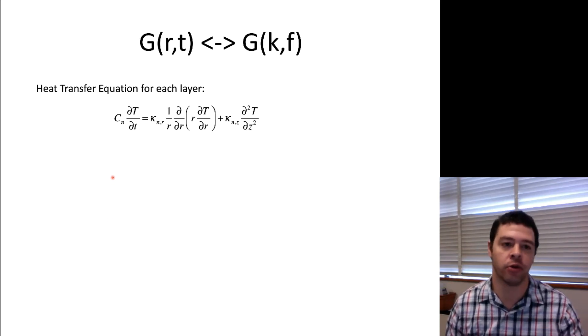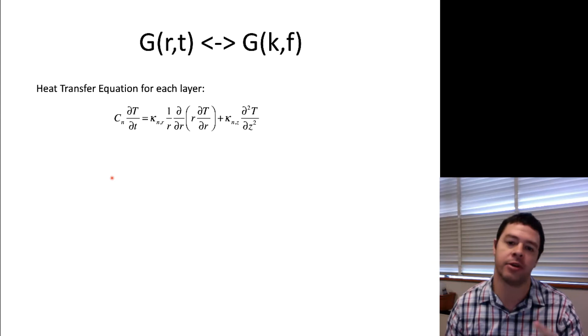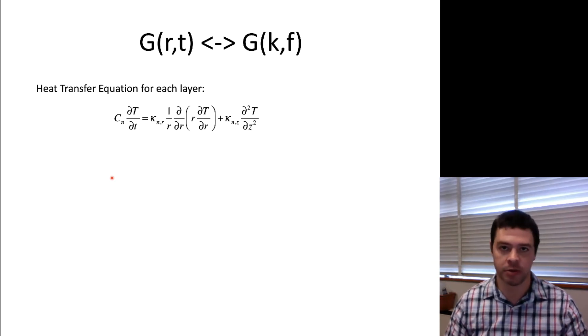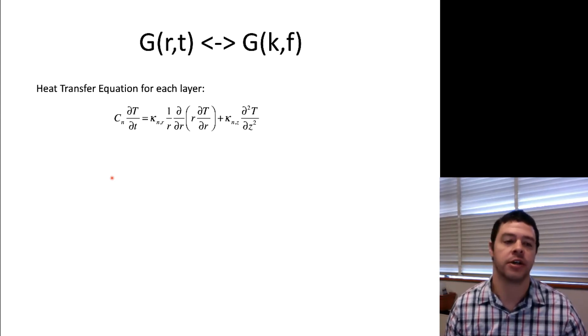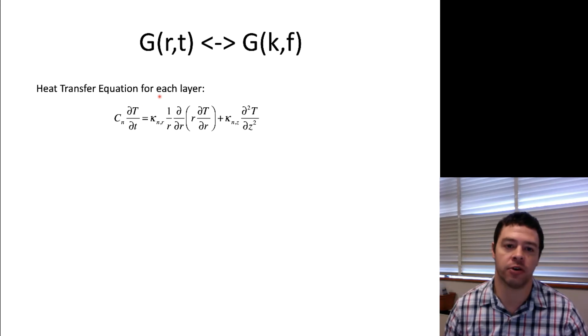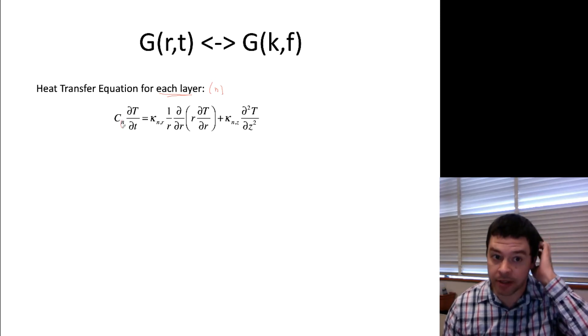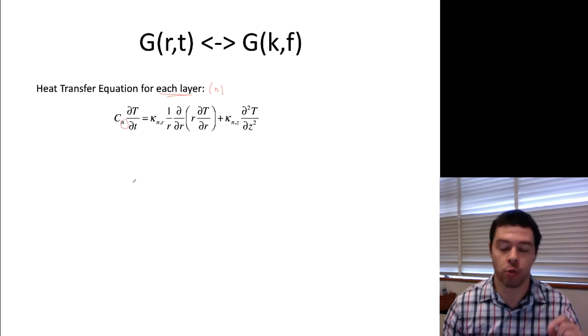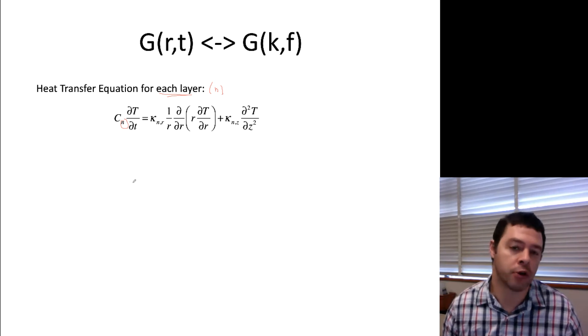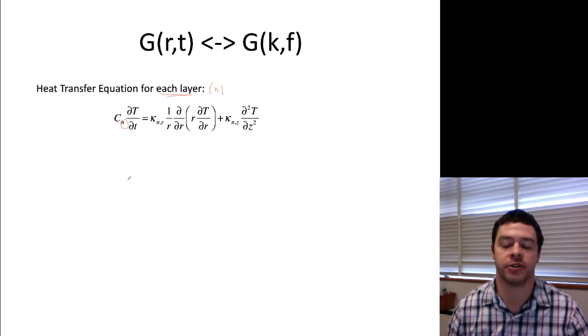It turns out that I really only have to solve the diffusion equation one time because the form of the solution will be the same for every one of the layers. So what I'm going to do is write the heat transfer equation for each layer. Actually, let me get a pen out here. For each layer, the layer I'm going to denote N. And so all of these subscript N's that appear here refer to which layer I'm in, but it really has the same form for each layer, so it doesn't matter so much.